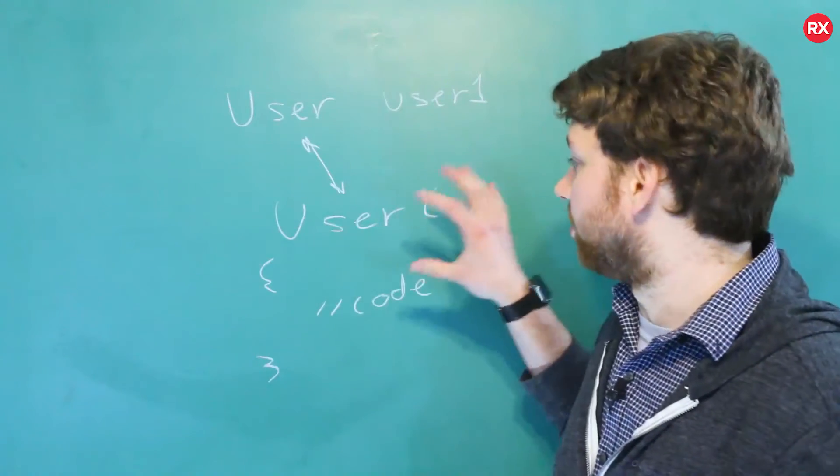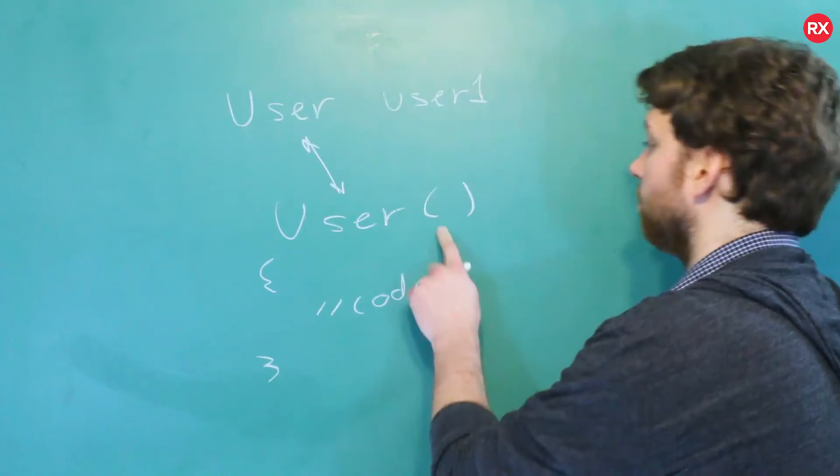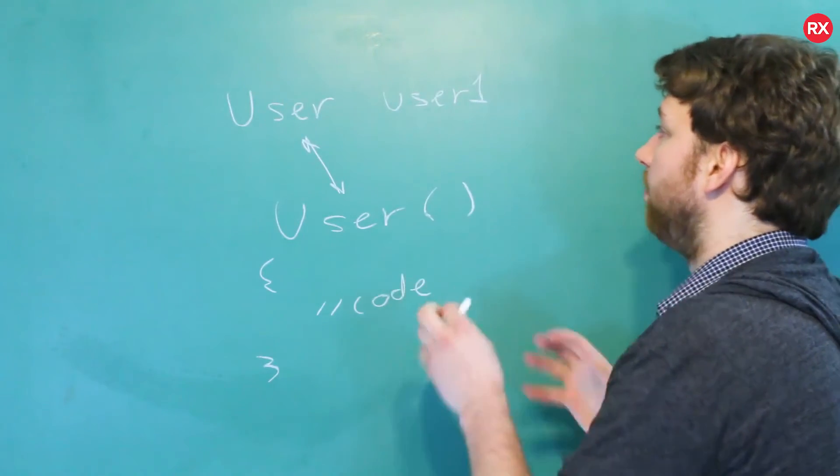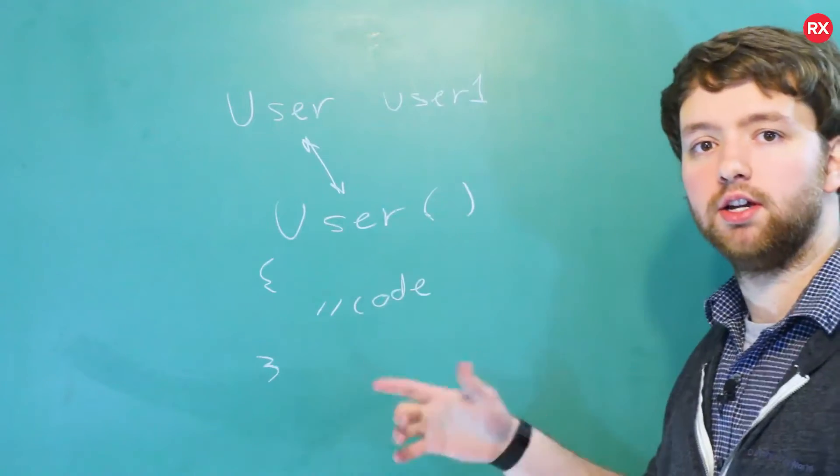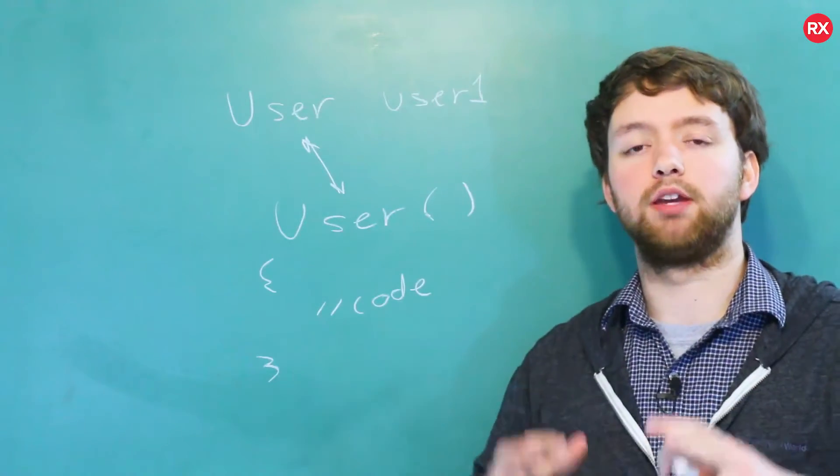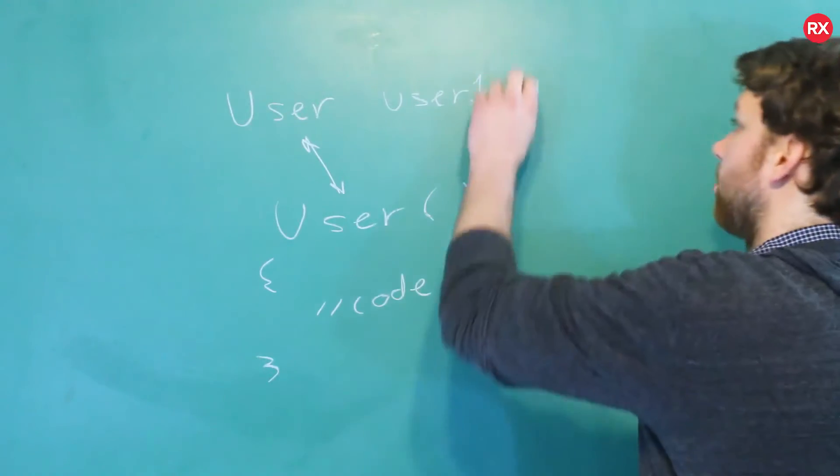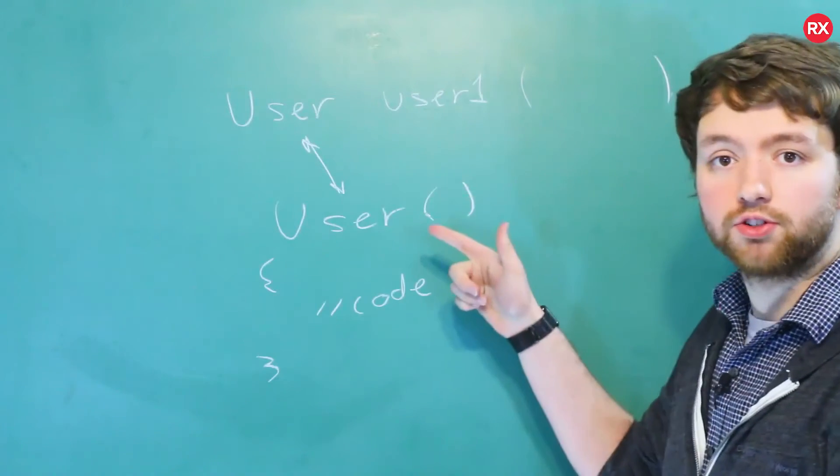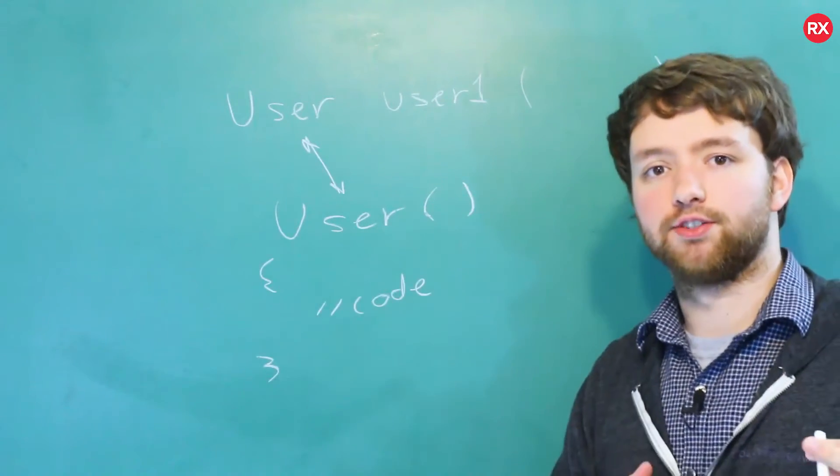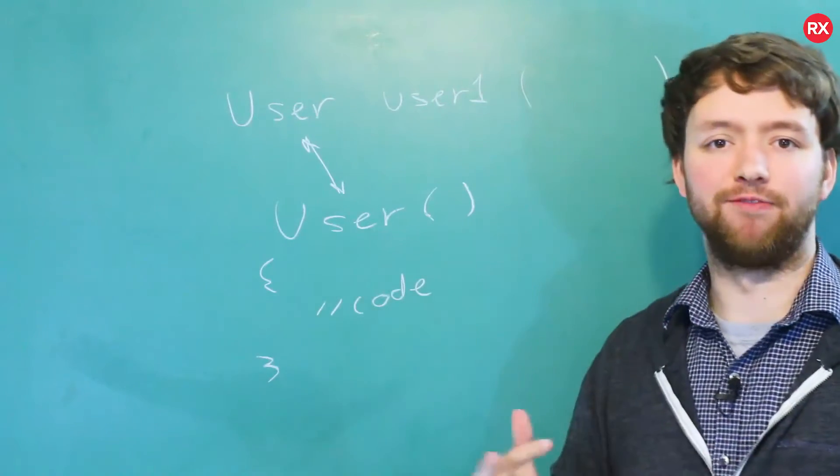The default constructor is the one with no arguments here, meaning when you say user one, this is the constructor that gets called. There is the option to make custom constructors that take parameters. So, in that situation, you can actually change the calling, and instead of just doing the default constructor, we can call a different constructor. So, it allows us to basically instantiate our user in different ways.